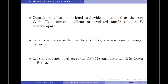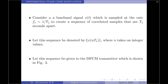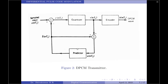Let us now consider a baseband signal x(t), which is sampled at the rate fs equals 1/ts, to create a sequence of correlated samples that are ts seconds apart, as shown in the diagram. Let this sequence be denoted by x(nts). This is the sequence of samples generated by sampling the input signal x(t) at rate fs, where n takes on integer values. Let this sequence be given to the DPCM transmitter. In this scheme, the input to the quantizer is a signal which is the difference between the unquantized sample x(nts) and a prediction of it denoted by x̂(nts).